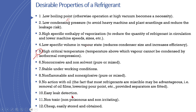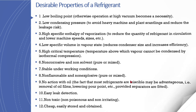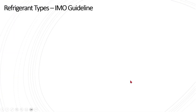Some refrigerants like ammonia and carbon dioxide are harmful. The refrigerant should be non-toxic, cheap, easily stored on board, and not banned by IMO or other regulatory bodies. These are the basic desirable properties required for a refrigerant.